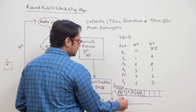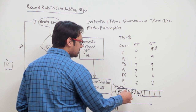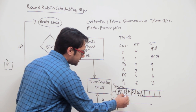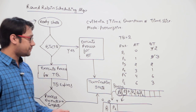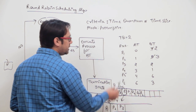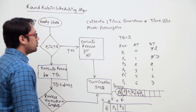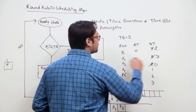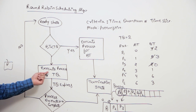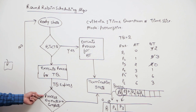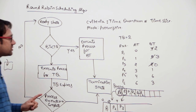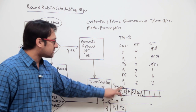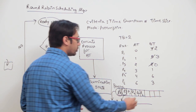Next, we take process P3 from the queue and execute it. The burst time of P3 is 2, which equals the time quantum, so we execute P3 until time unit 6 and its burst time becomes zero. Since P3's execution is complete, we do not put P3 back in the queue. Also, by time unit 6, process P6 has arrived, so we put P6 in the queue.